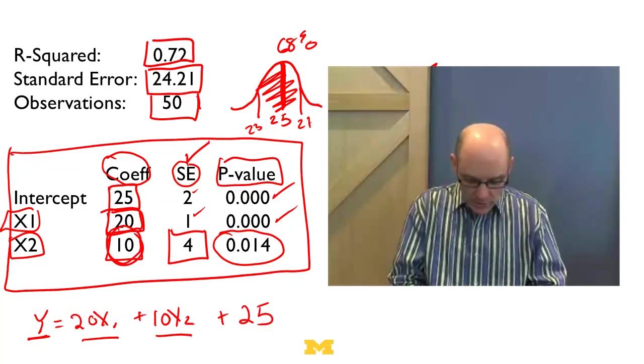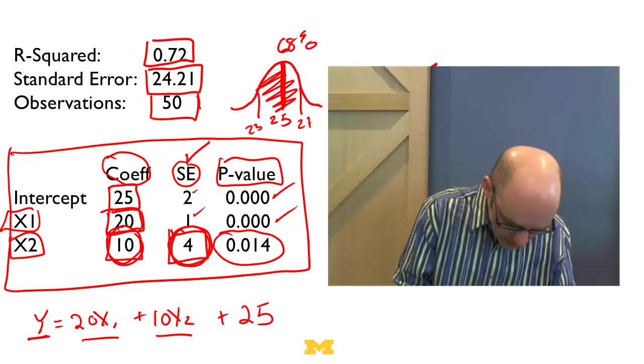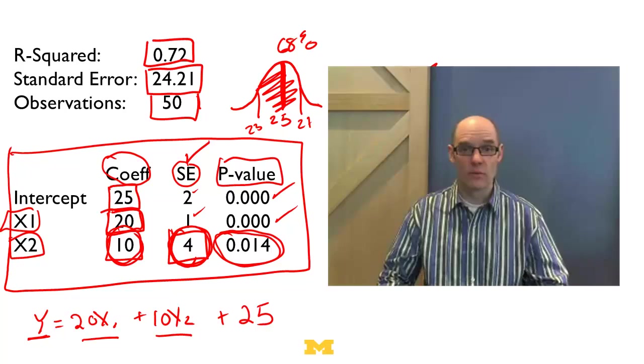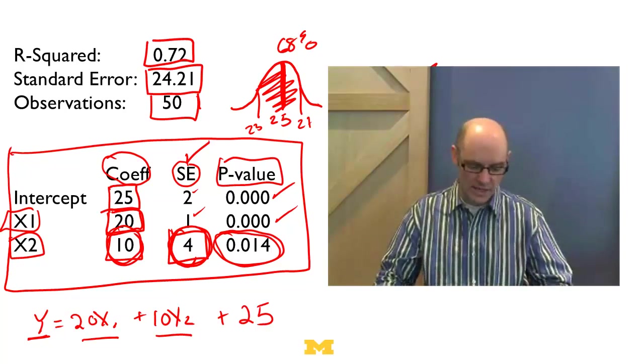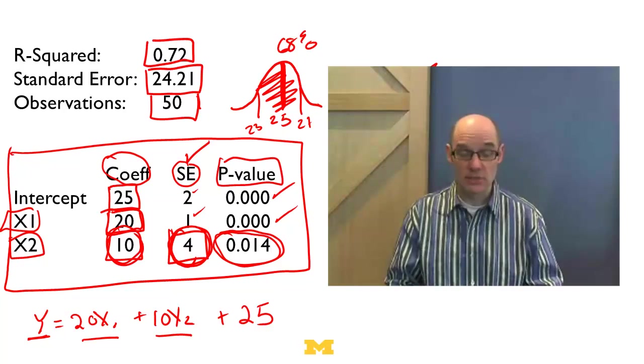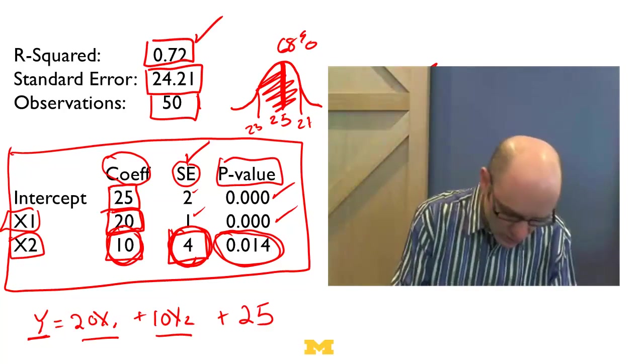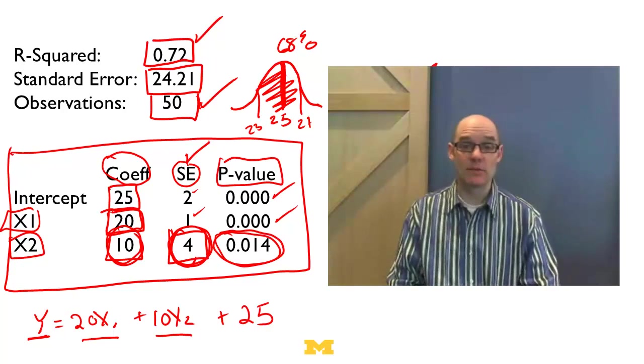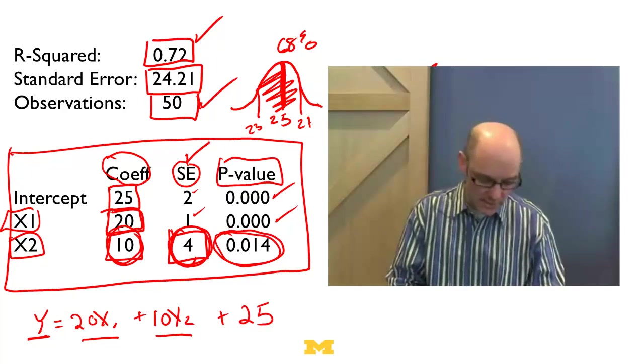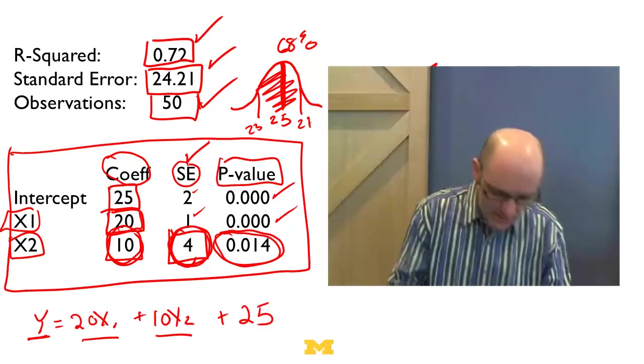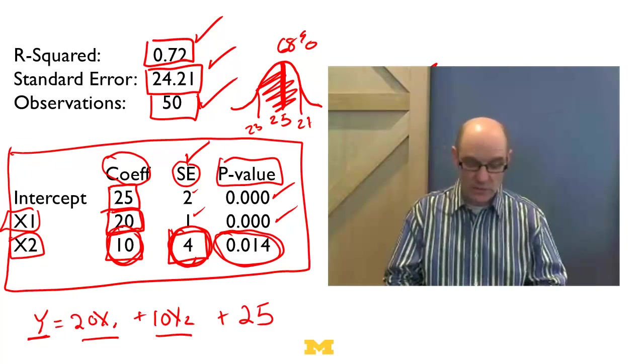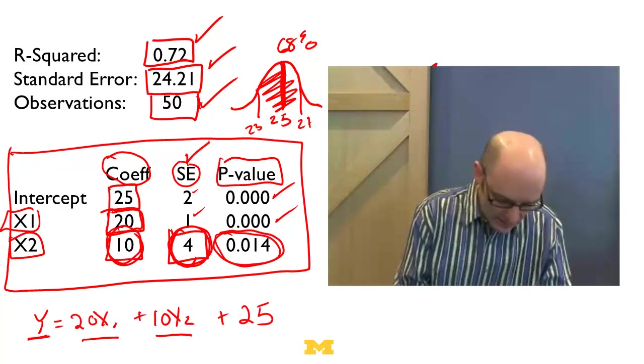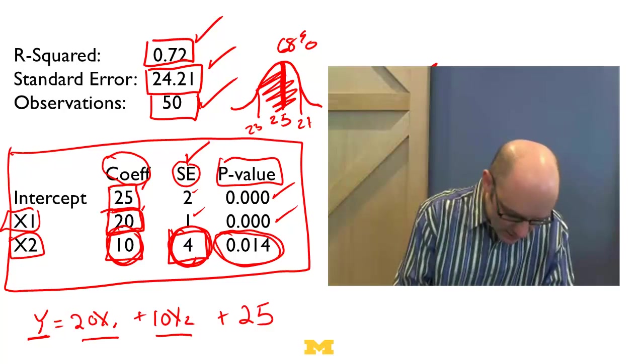So, the regression output is saying, because our standard error is so large, we're not sure about that 10, there's actually a decent chance instead of being positive that's negative. All right, let's recap for a second. What have we got? So we see this regression output, it tells us a bunch of stuff. It tells us, first, what the r squared is. How much of the data do we explain? Second, it tells us how many observations do we have. A lot of observations or not many. Third, it tells us how much variation was there in the data to begin with, and the answer is, on average, 24.21, so quite a bit of variation.